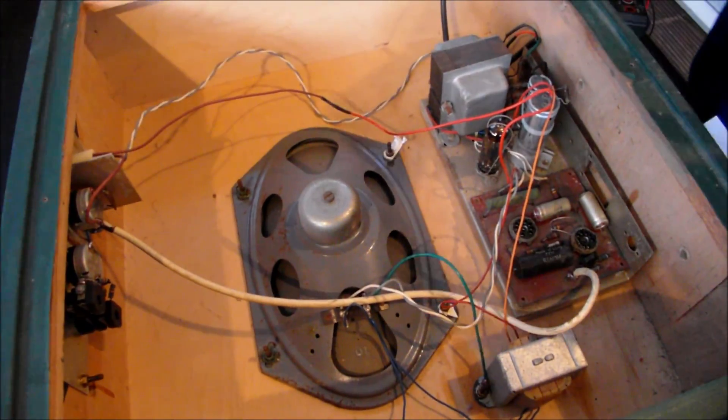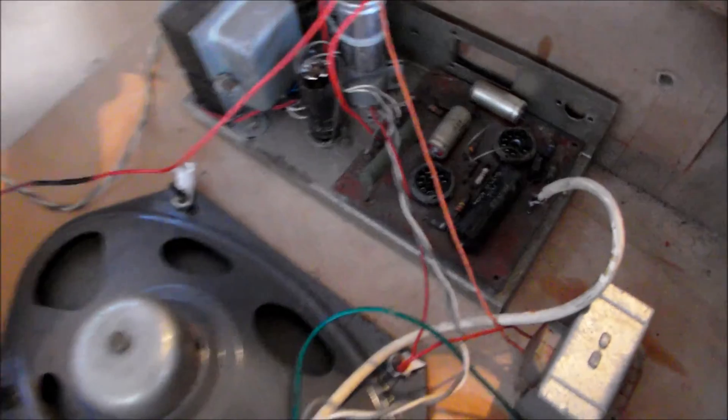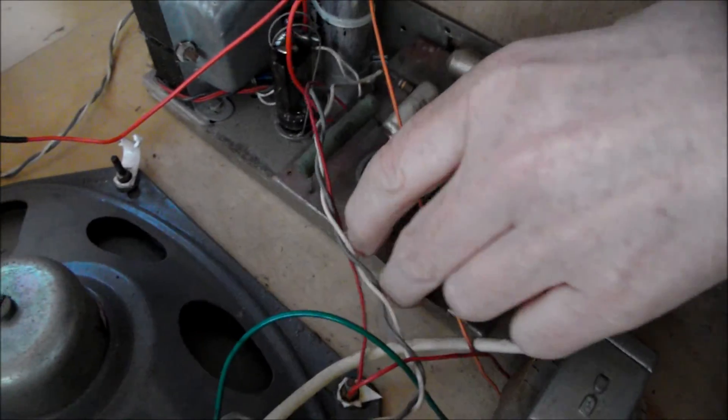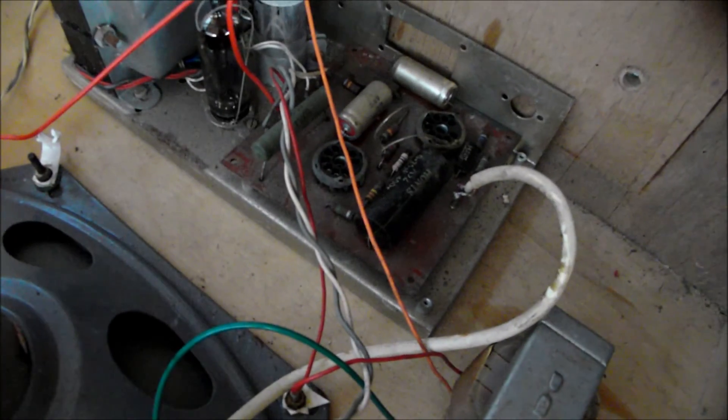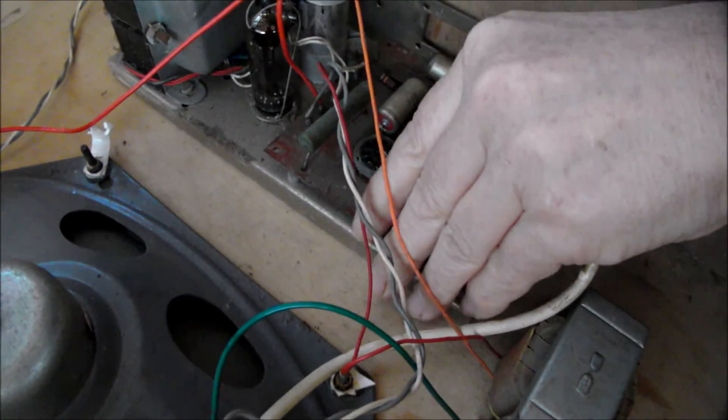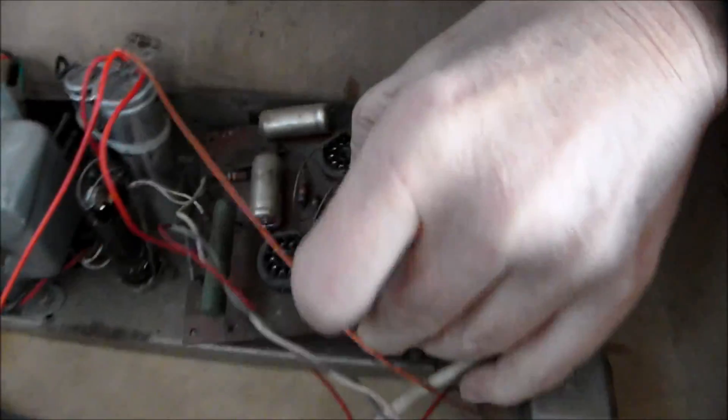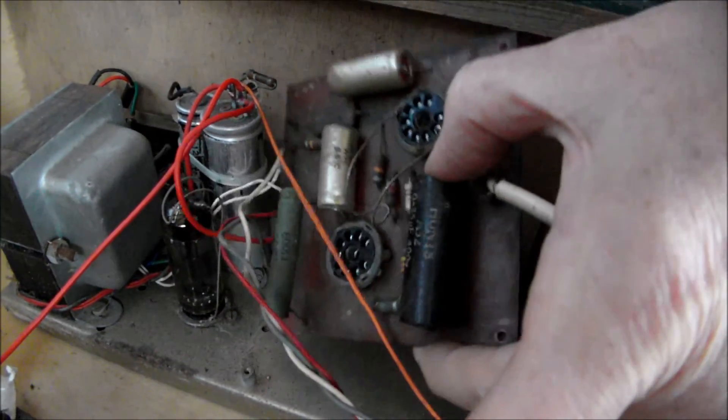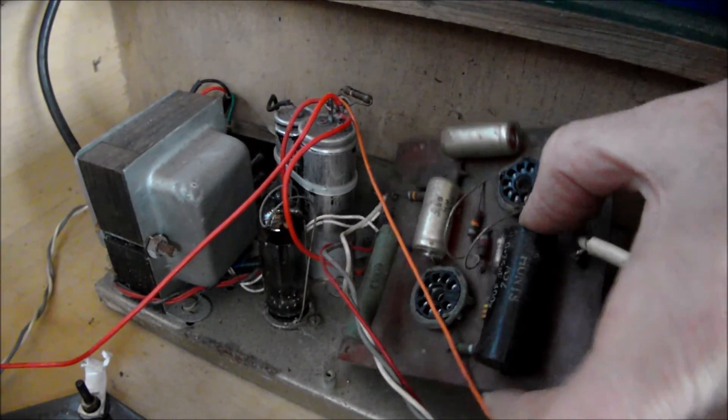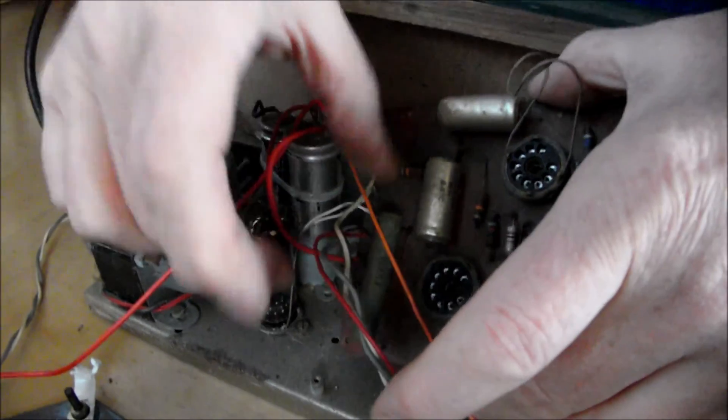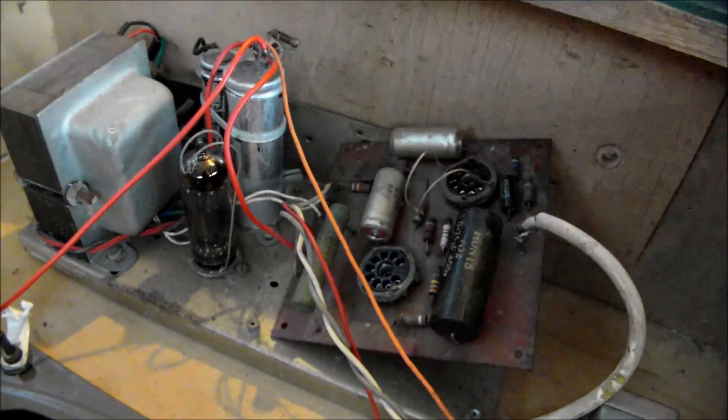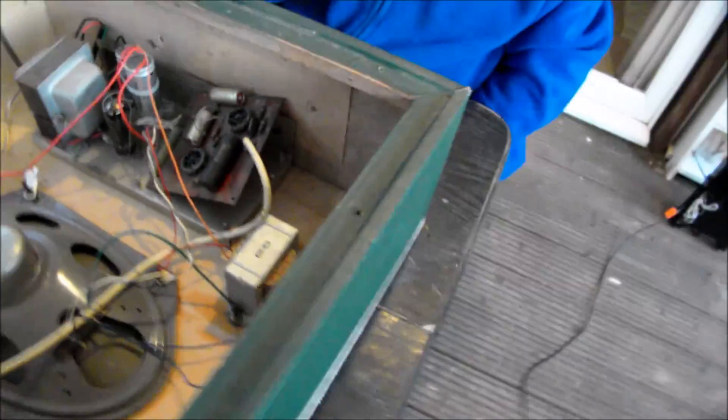After a considerable amount of voltage checking and what have you, what we've discovered is a 560 ohm resistor is open circuit. That one there. Anyway, we didn't have a 560 ohm resistor, but what we did have is a 600 ohm resistor. That's the incorrect value, isn't it? Anyway, this diagram here.